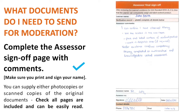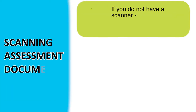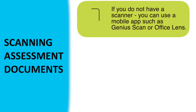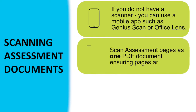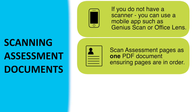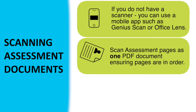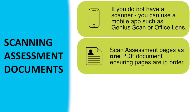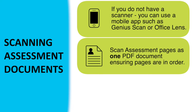You can supply either photocopies or scan copies of the original documents. Check all pages are included and can be easily read. Genius Scan and Office Lens are free mobile phone scanning apps popular with assessors. Scan pages as one PDF document. Take care when scanning to make sure the pages are the right way up and in order — our moderators can't read your documents if they are upside down.